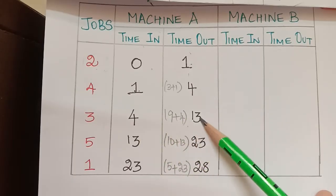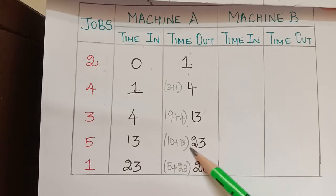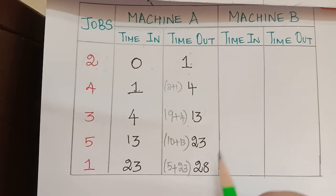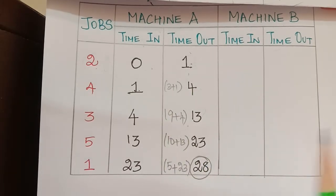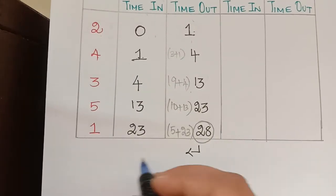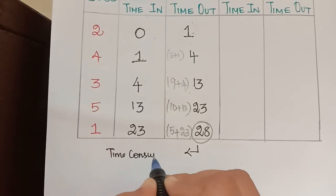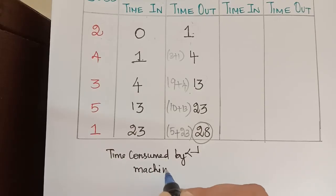We add each job's processing time to its time in to get time out, carry that forward as the next job's time in, and continue. The final value — 28 — is the time consumed by machine A.